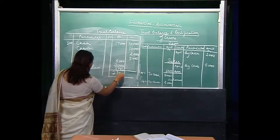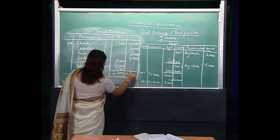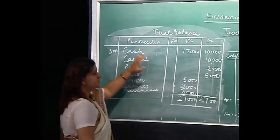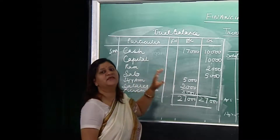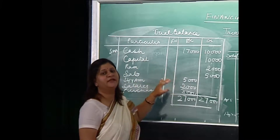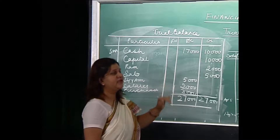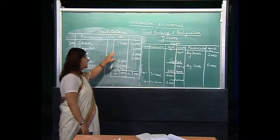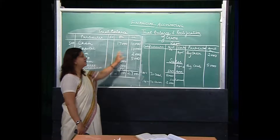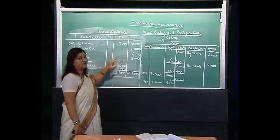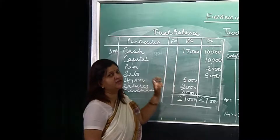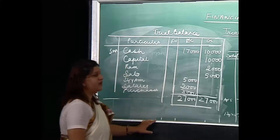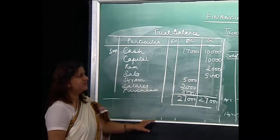The totals are coming as 27,000 on both sides — 27,000 and 27,000. So we can say that posting is correct: each entry is recorded on the respective sides, each debit has a corresponding credit posting, the accounts are prepared correctly, the amount is shown properly, and proper heads are shown. This is the first method of preparing the trial balance.